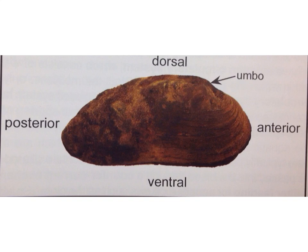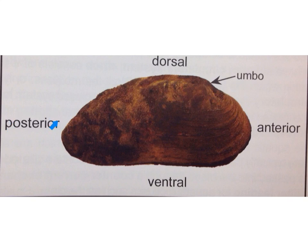All mollusks, including the clam, exhibit bilateral symmetry, in which the animal can be divided into an equal mirror image along a sagittal plane. Because the outer shell of the clam does not reveal its body regions, its symmetry can be confusing. You need to look at the hump or the umbo to orientate the body. It's also important to know the following terms: anterior is towards the head region, posterior towards the tail region, dorsal is the upper surface, and ventral is the bottom surface.